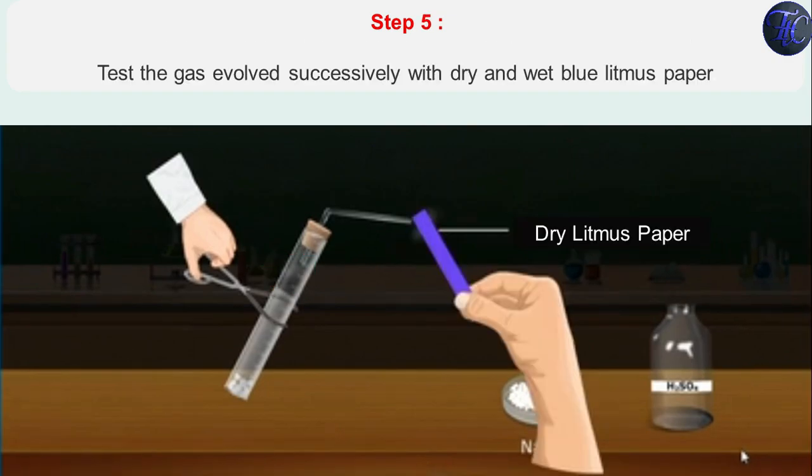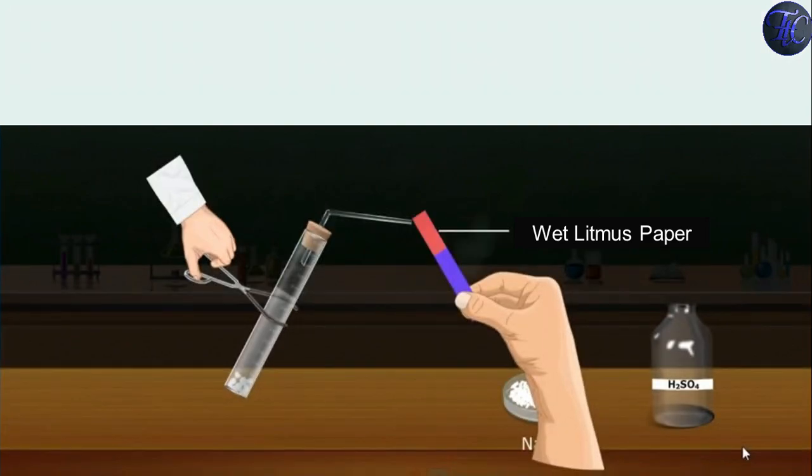Step 5: Test the gas evolved successively with dry and wet blue litmus paper. First take dry litmus paper near to the delivery tube from which gas is coming out. Did you observe any changes? No, no changes is observed. Now take the wet litmus paper near to the delivery tube. Did you observe any changes? Yes. Wet blue litmus paper is turned to red color.